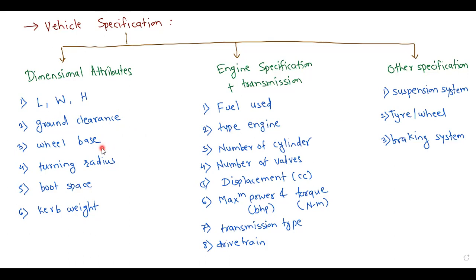To summarize: if you want to compare any two vehicles, consider dimensional attributes, engine specification and transmission system used, and other specifications like suspension, tires, and brakes. These are all important parameters to consider while comparing any two bikes or cars, so you can choose the best vehicle for your purpose. The same approach applies to bikes — you can search for bike specifications using these same parameters.